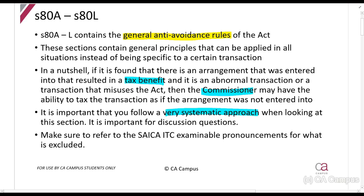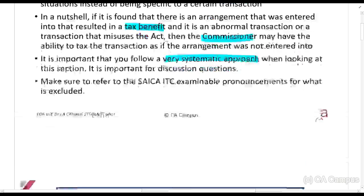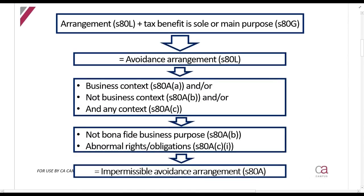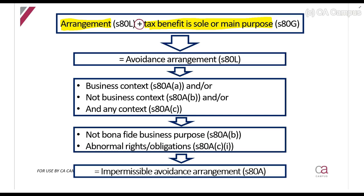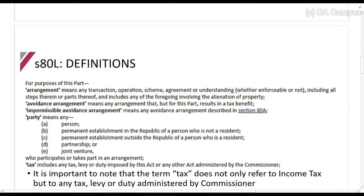This section is quite simple if you follow a systematic approach. You can't just jump all over the place with this. The first thing is we're going to look at what an arrangement is. In simple terms, an arrangement is basically anything — any transaction, any agreement that you make between people. There must be something happening between two people. Plus, there must be a tax benefit, and the sole or main purpose must be to have a tax benefit. If those conditions are met, that is called an avoidance arrangement.